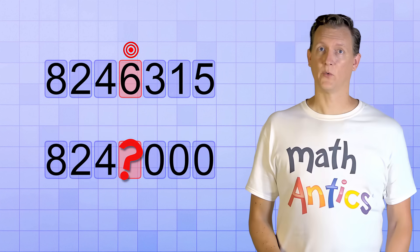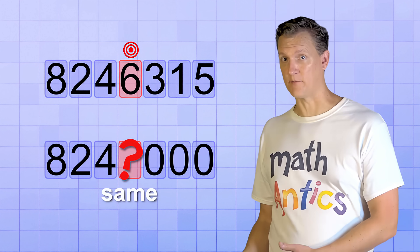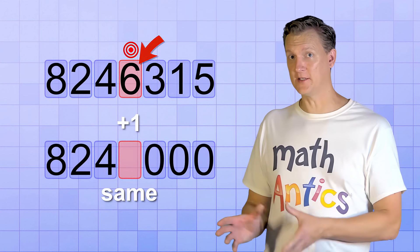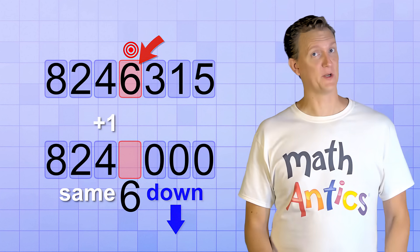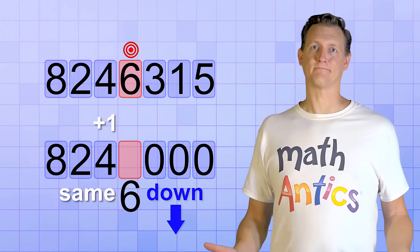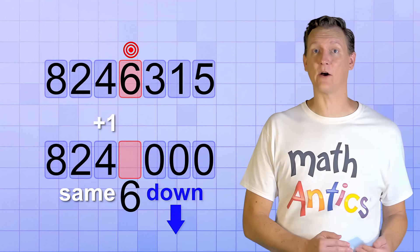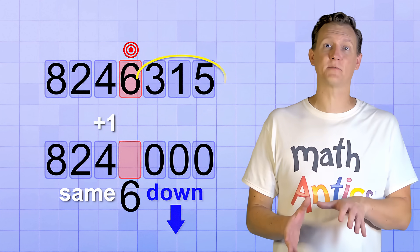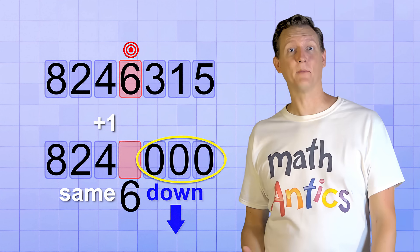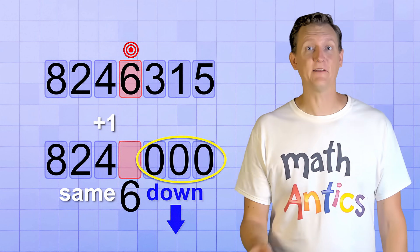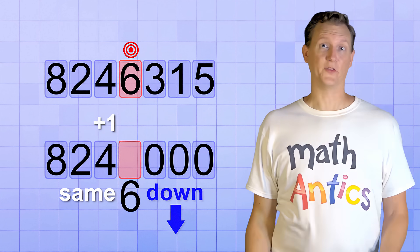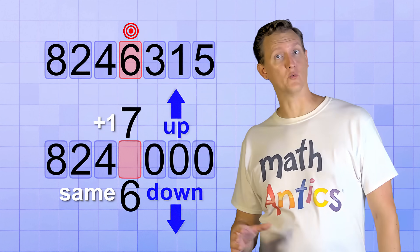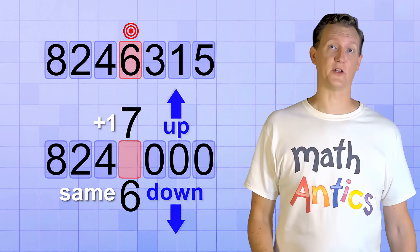Well, we're going to do one of two things. We're either going to keep that digit the same, or we're going to increase it by one. If we keep that target digit the same, that's called rounding down. Which might seem strange at first. I mean, how can leaving the digit the same be rounding down? But remember, we're going to automatically replace all of the smaller places with zero. And doing that makes a rounded number smaller, even if the target digit stays the same. On the other hand, increasing the target digit by one is called rounding up, since the new rounded number will be larger than the original number.